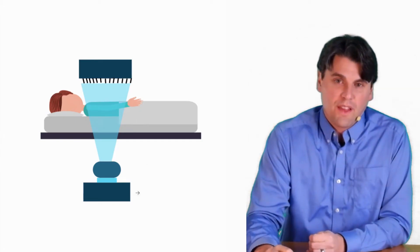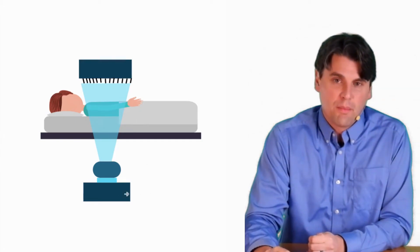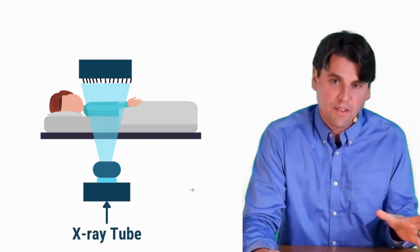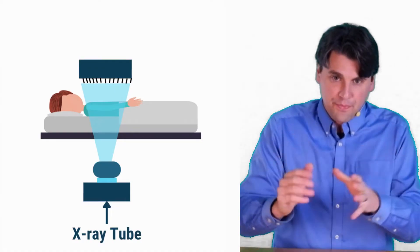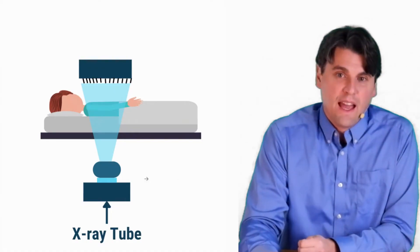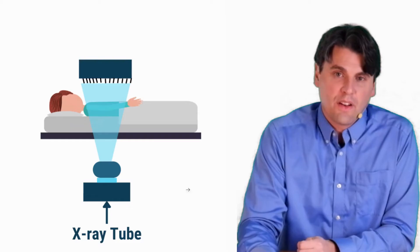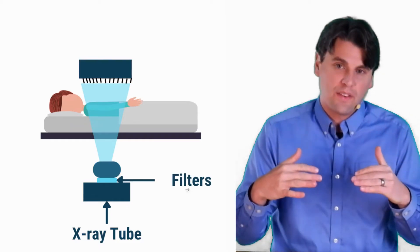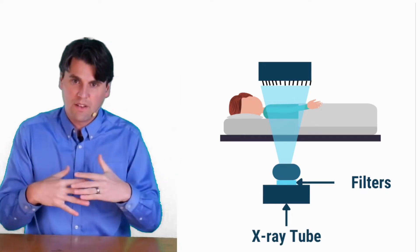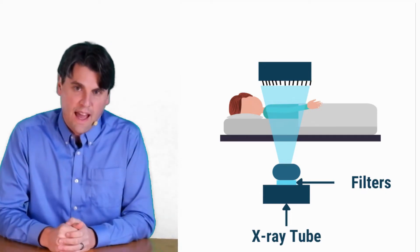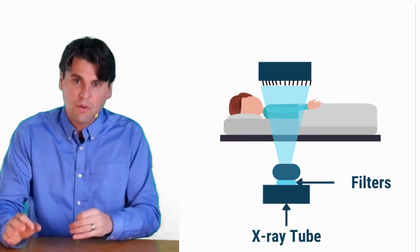So first off, the thing that generates x-rays, we've talked about before on this channel a lot, is called the x-ray tube. Check out our video on x-ray generation and x-ray tubes. And then the x-rays are then going to pass through first a set of filters and those are filters on these systems that you can actually move in and out essentially to tailor the x-ray flux throughout the field of view.